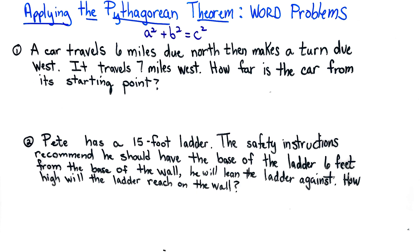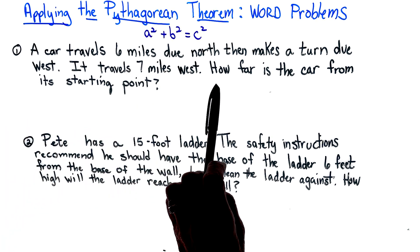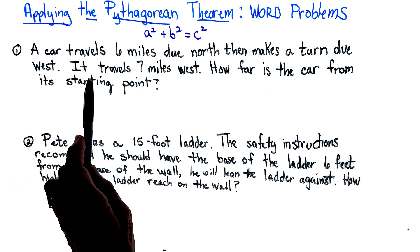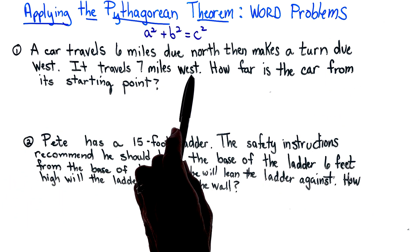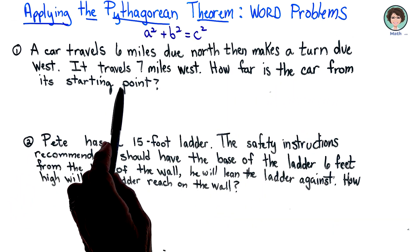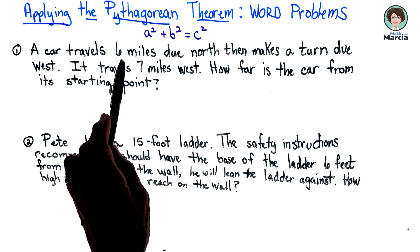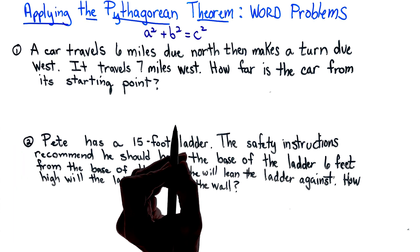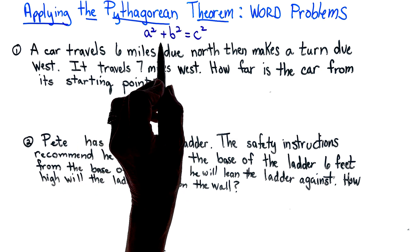Let's start by reading the problem. A car travels six miles due north then makes a turn due west. It travels seven miles west. How far is the car from its starting point? You probably just want to add the six plus the seven, but we're really talking about the distance that is a diagonal distance. When I hear the word diagonal, I know I'm going to be using this formula.